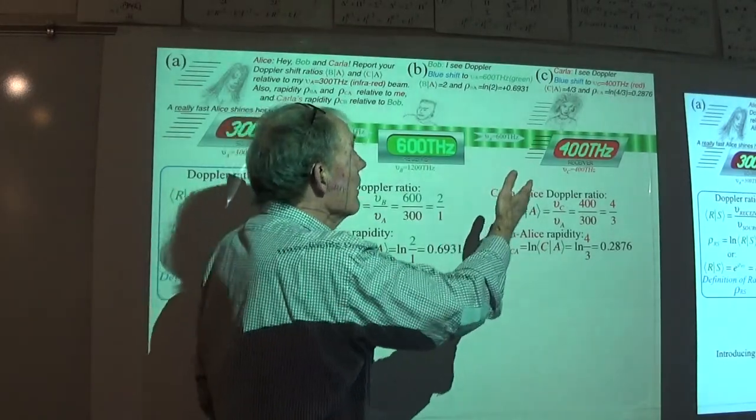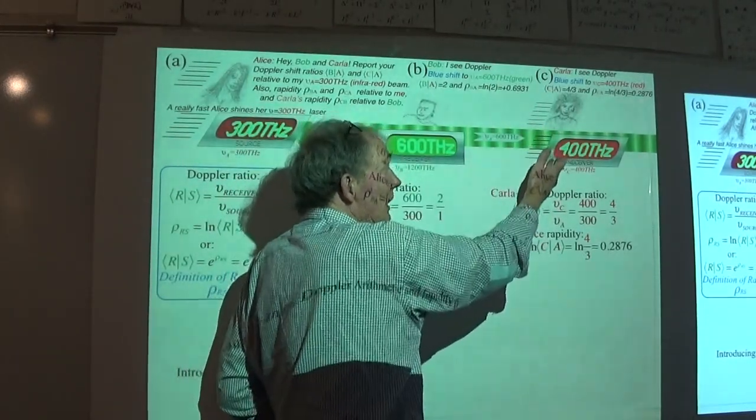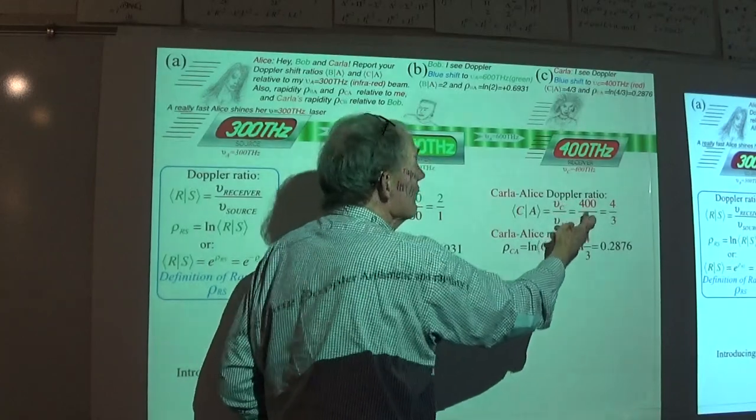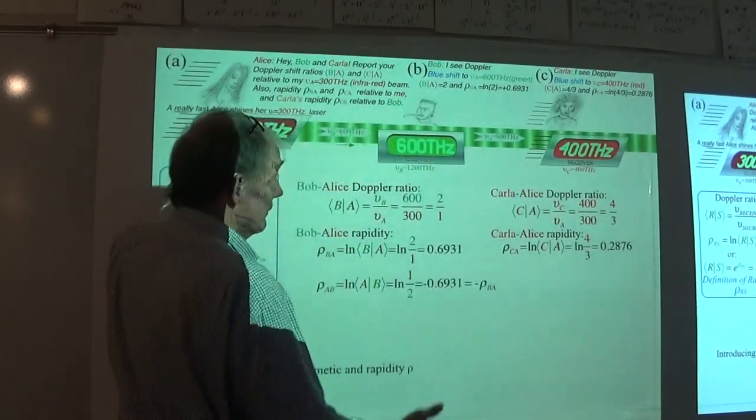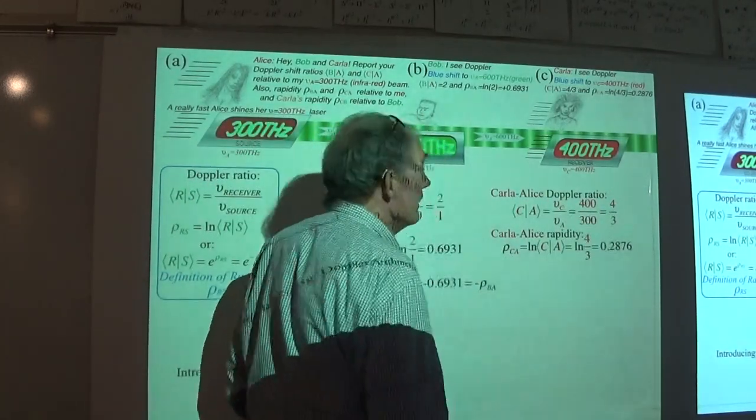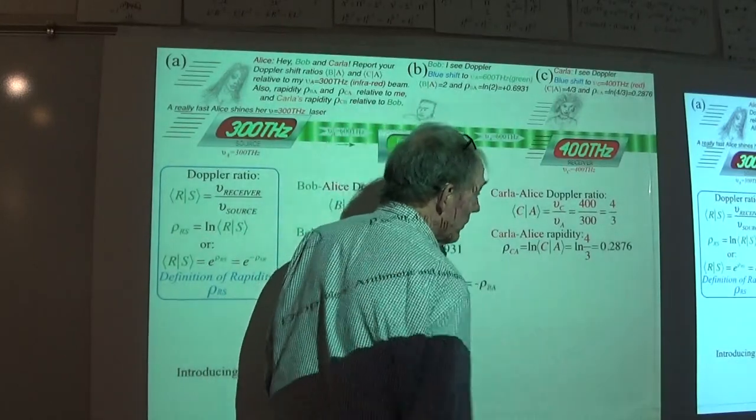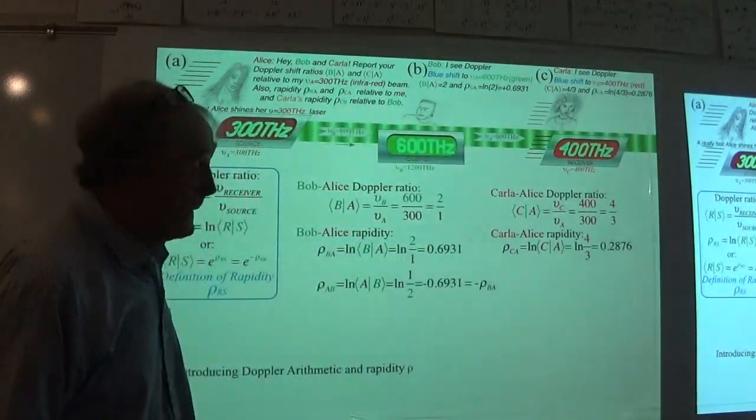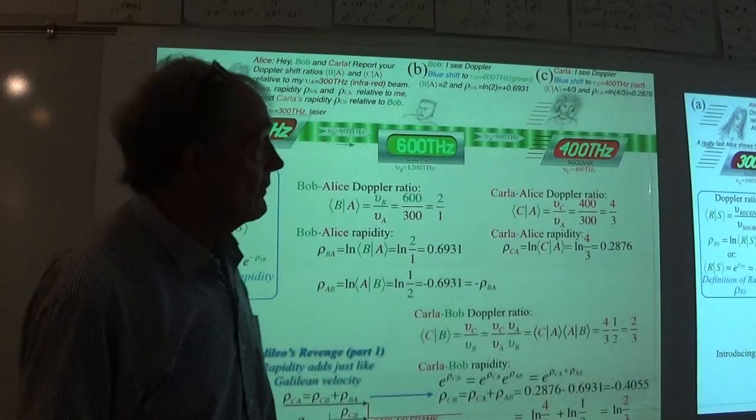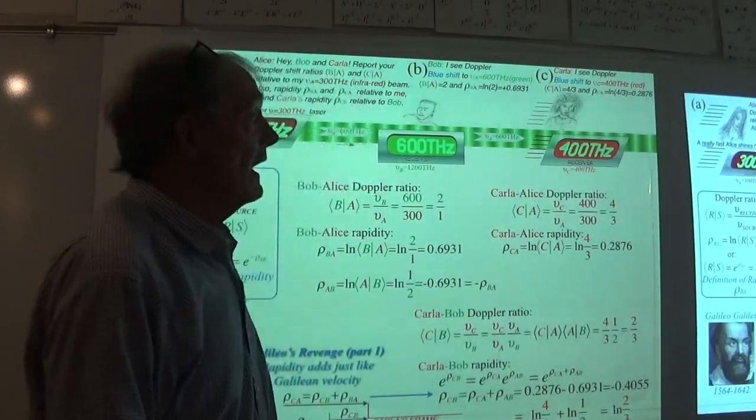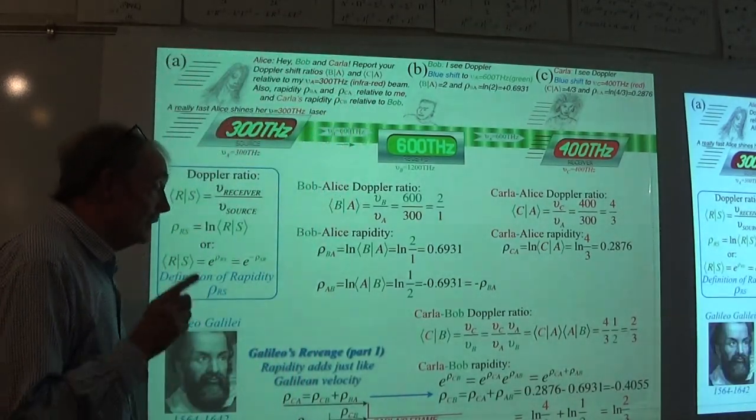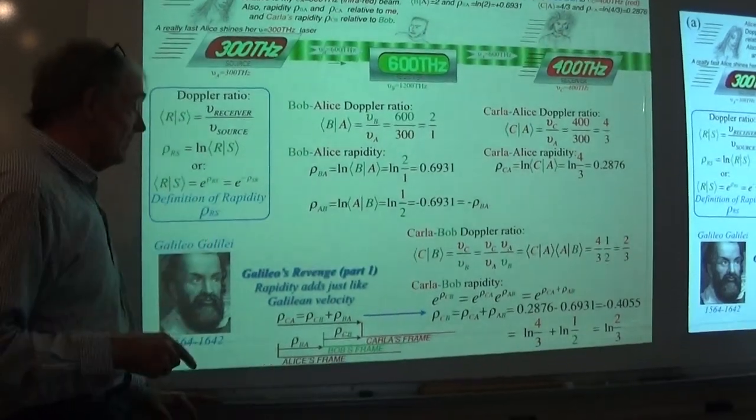And meanwhile, Carl is down the line here, picking up Alice's light as well. And we're seeing a 400 over 300 ratio for her. And the logarithm of that is 0.286. So let's take this ahead here a little bit and show Galileo's revenge. This is part one of his revenge today.